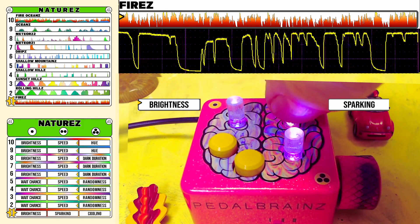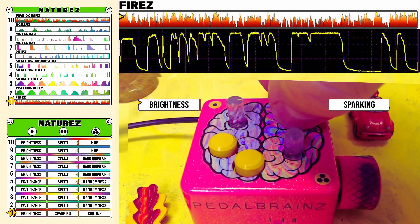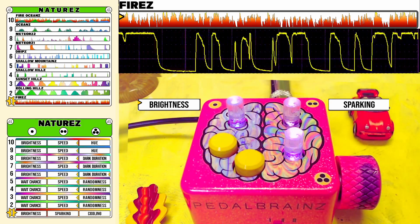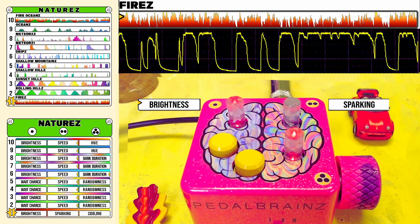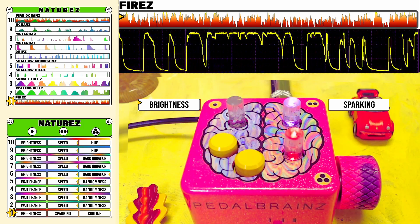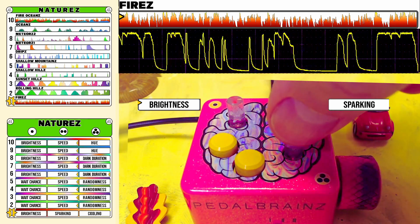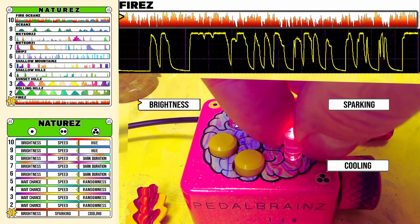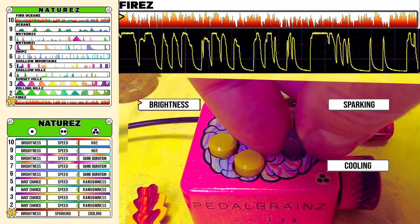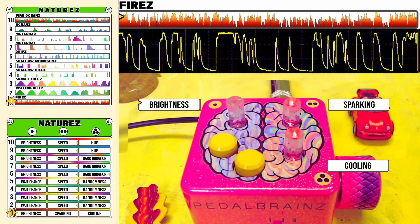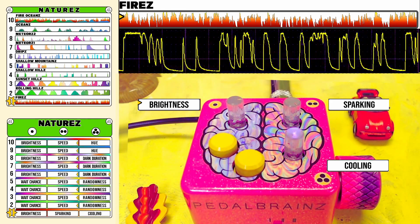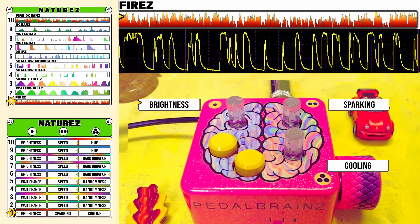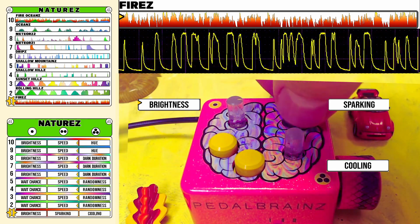Knob 2 is your sparking control and brings more or less of that sparkling and crackling fire. Knob 3 is the cooling knob, and as you turn that down you have various fades reflected in the output of this mode.